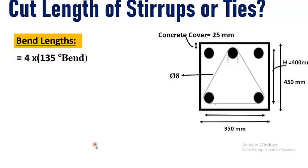So now calculate bend lengths. As I have mentioned before, we have only 135 degree bend. Here we have 4 number of 135 degree bends: that is number 1, here number 2, this is number 3 and this is number 4.